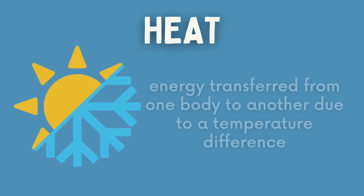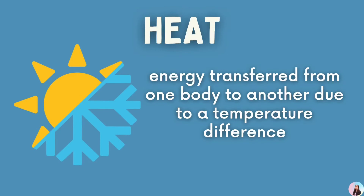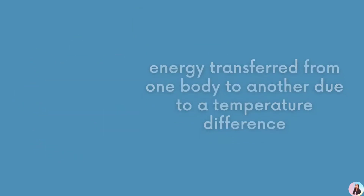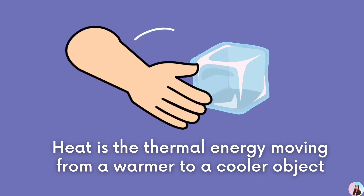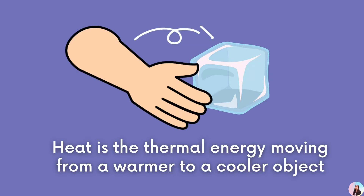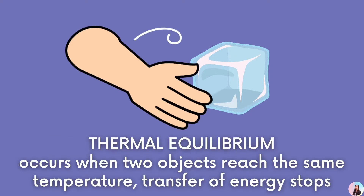Heat is the energy transferred from one body to another due to a temperature difference. For example, when you hold an ice, there is a difference in temperature between your hand and the ice. Your hand has a higher temperature compared to the ice. Your hand starts to transfer heat to the ice until your hand and the ice reach the same temperature.